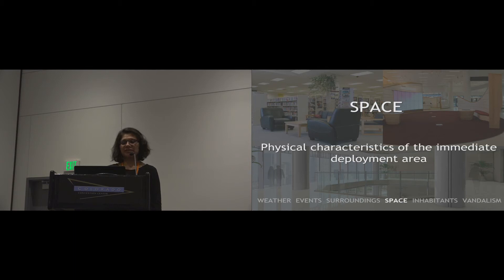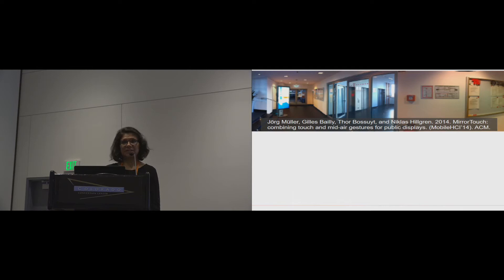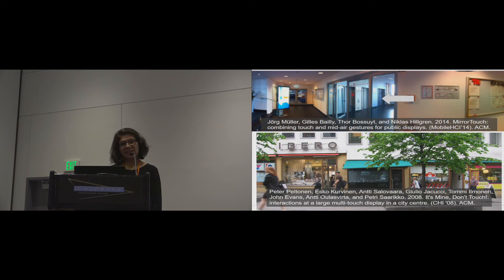As the fourth category, we consider space, which refers to the physical attributes of the immediate deployment area. The characteristics of the space affect how people move in the space, how the space is being used, and by which group of people. For Mueller et al., nearby elevators influenced the use of their public display installation, as people would often interact with the system while waiting and then abruptly stop when the elevator arrived. The Helsinki City Wall installation, positioned on a street under a sunshade, found that when it rained, people would use the sunshade to seek shelter, effectively blocking the visibility of the display.